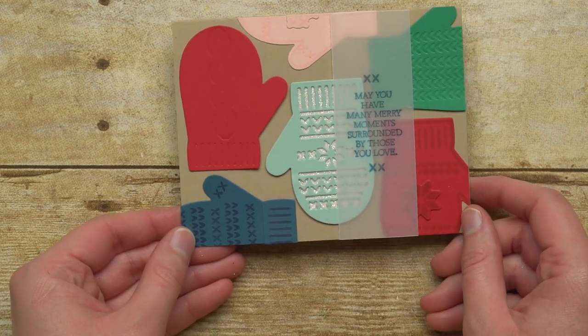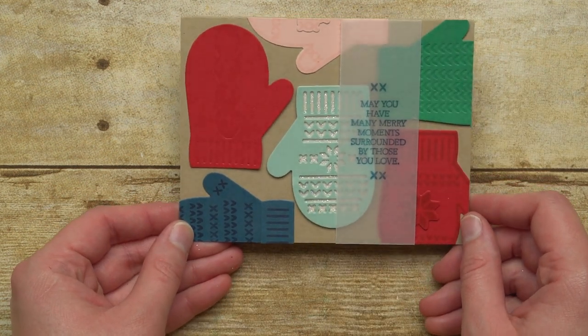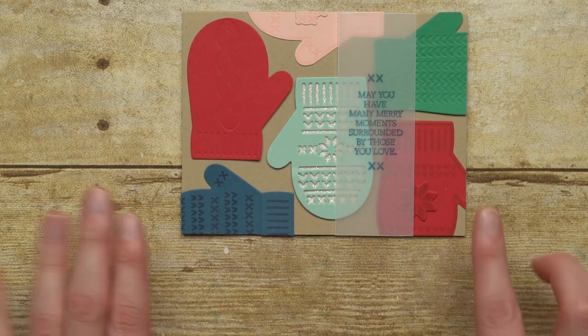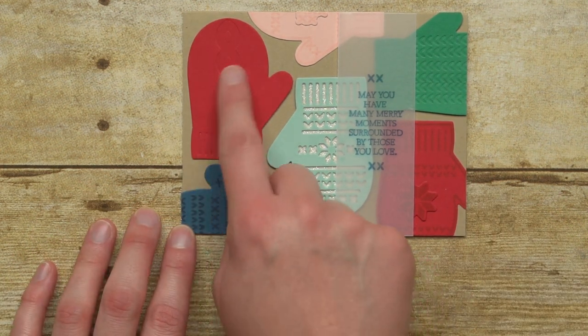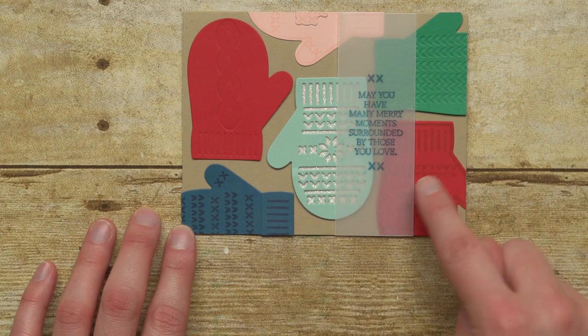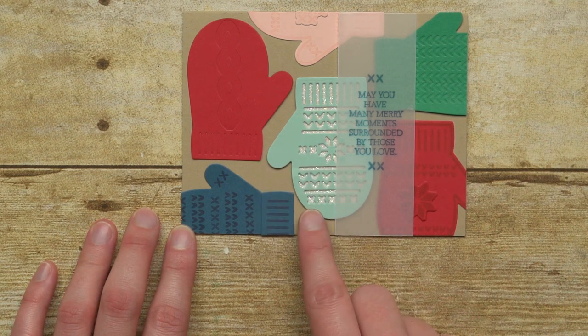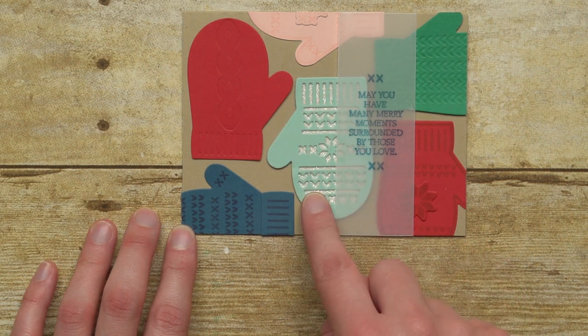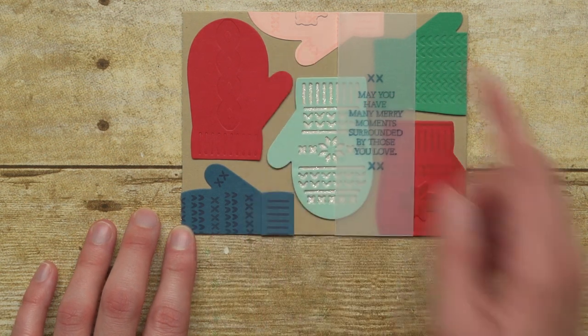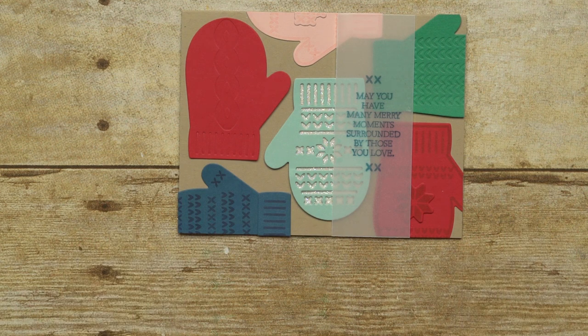Here is a card with several different mittens on it, so you can see all of the different ways that these work together. Here's the dry embossing only. Here's stamping and a little bit of die cutting and embellishing. We've layered up glimmer paper with a detailed mitten here, and a little more stamping. Isn't that just so cute? There are so many options.